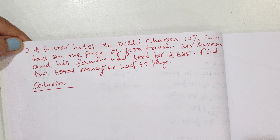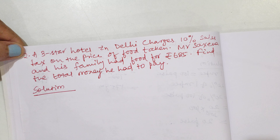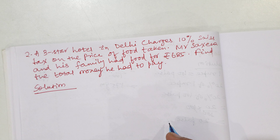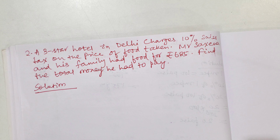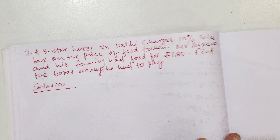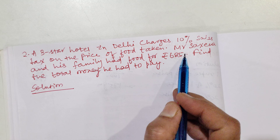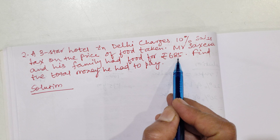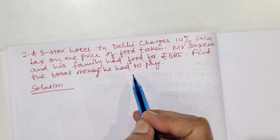The next question is: a three-star hotel in Delhi charges 10% sales tax on the price of the food taken. Mr. Saksena and his family had food for Rs. 685. Find the total money he had to pay.